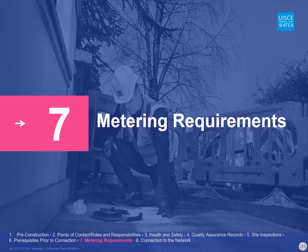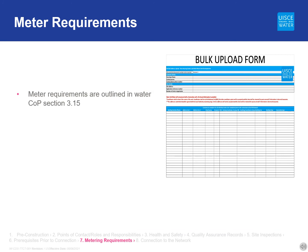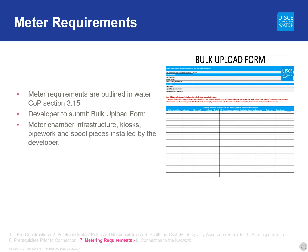Boundary boxes and bulk meter chambers are provided and installed by the developer. Irish Water's delivery partner will supply and fit all water meters required for developments. The requirements for installation of water meters and associated chambers are outlined in section 3.15 of the Water Codes of Practice. Before a connection is made to the network, the developer must submit a bulk upload form to Irish Water. This enables Irish Water to create water point reference numbers, also known as WPRNs, for all units paid in the connection agreement. The coordinates must be to Irish National Grid and the addresses provided must be the same as agreed with the planning authority. A bulk upload form is available in the appendices of the self-lay agreement or can be requested from Irish Water. All meter chamber infrastructure, kiosks, pipework, and spool pieces shall be installed by the developer.